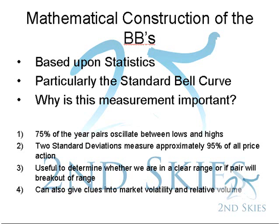The Bollinger Bands also give us clues into market volume, volatility, and relative volume — some information we don't have direct access to. By showing when the bands are contracted and horizontal, that means the order books aren't heavily skewed and there's no real winner between the buyers and sellers. But when the bands are expanding massively, it's clearly obvious that either the buyers or sellers are in control.